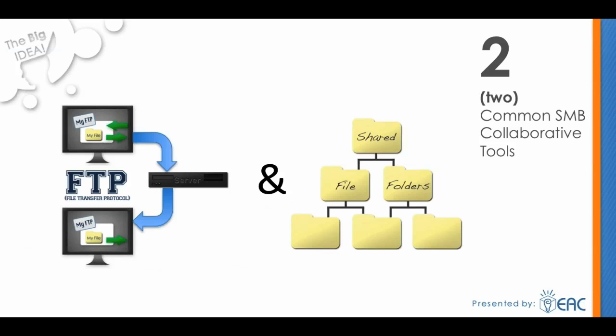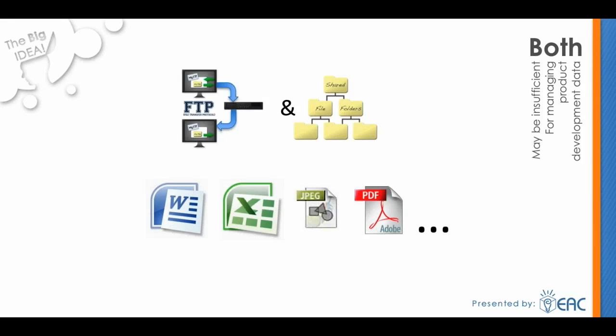Let's dive right in and talk first about the collaborative tools a number of small and medium businesses use. The first is file transfer protocol, or FTP sites, which are used to exchange files over the internet. The second is a shared folder infrastructure, or network share — a device or piece of information that can be remotely accessed from another computer, often associated with peer-to-peer file sharing. These tools can work for many SMBs in many industries. They're sufficient, particularly in the Microsoft suite of applications, when a file or document has one creator but needs to be accessed by a number of different people.